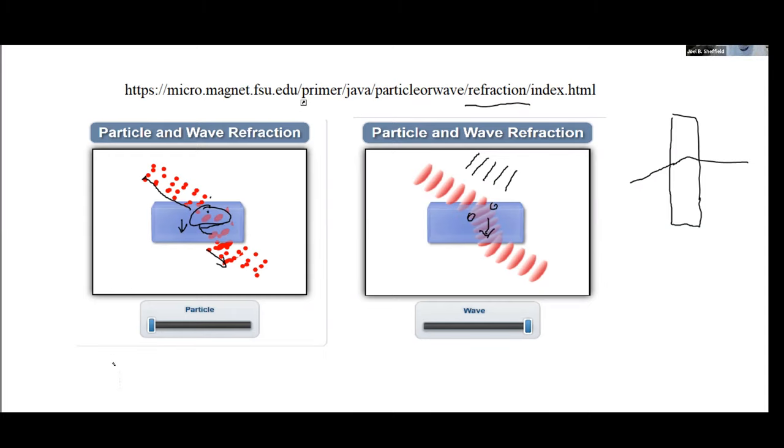Newton had the idea that the nature of light was in fact that it was particles. And on the other hand, Hooke, and later on Huygens, who joined Hooke in this analysis, felt that light had the properties of waves.